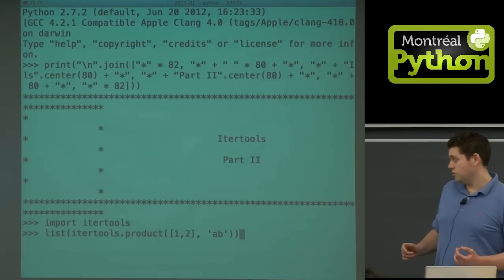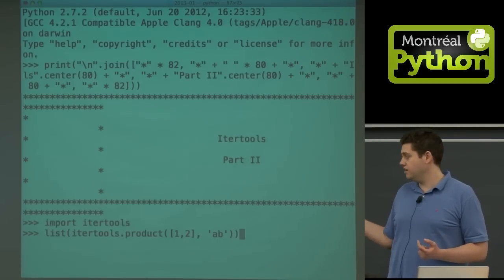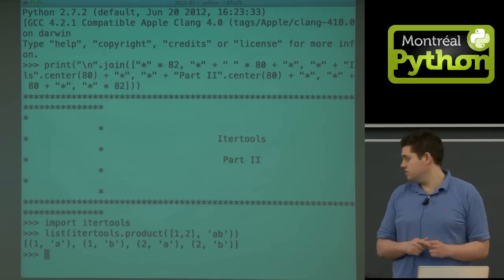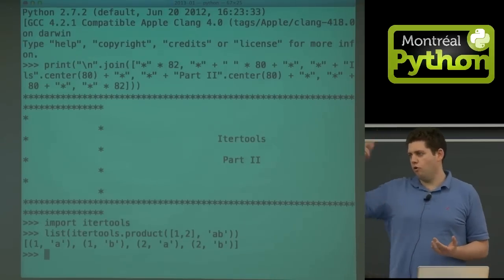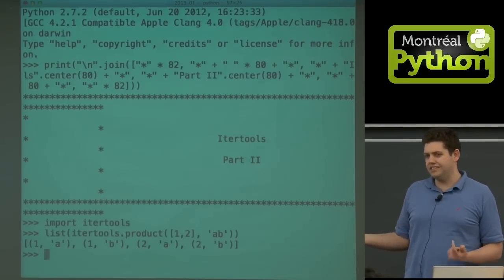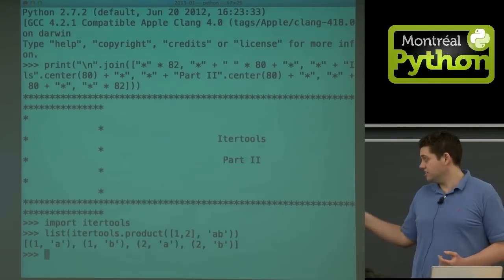Product will take two sequences, so in this case a list of two items and then a string of two characters, and will return a sequence of them productized against one another. This is basically like a for loop inside a for loop. It's not brain surgery, but these are all sort of weird functions that aren't always trivial to implement.